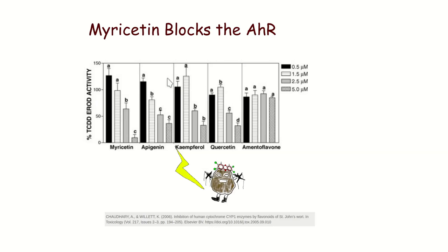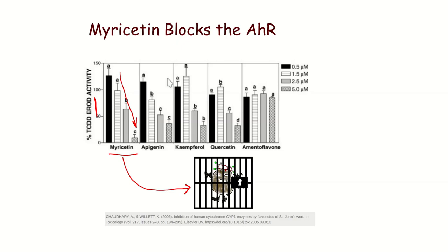Additionally, myricetin at high enough concentration also blocks the aryl hydrocarbon receptor itself. This is tested using EROD, a gene whose expression is increased by the aryl hydrocarbon receptor — an indirect test of aryl hydrocarbon receptor activity. These cells have been given TCDD so the aryl hydrocarbon receptor is activated and cranking out EROD. As higher and higher concentrations of myricetin are given, EROD activity drops. Other flavones — apigenin, kaempferol, quercetin — are also pretty good. Flavones in general have this activity of putting the activated aryl hydrocarbon receptor back in its cage.